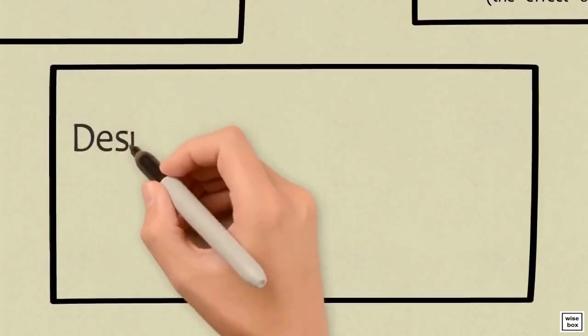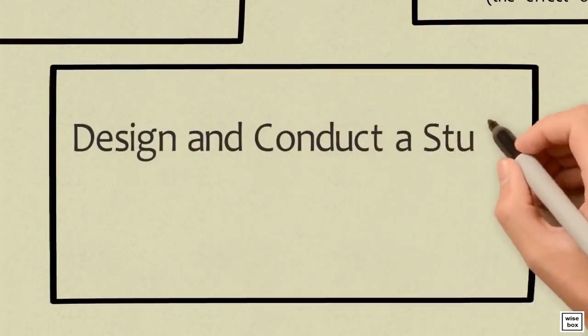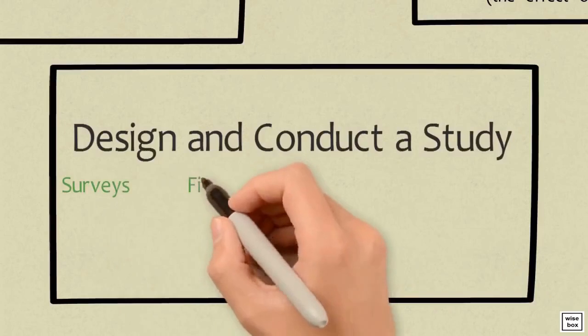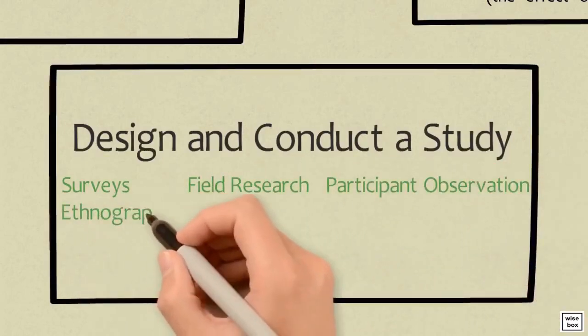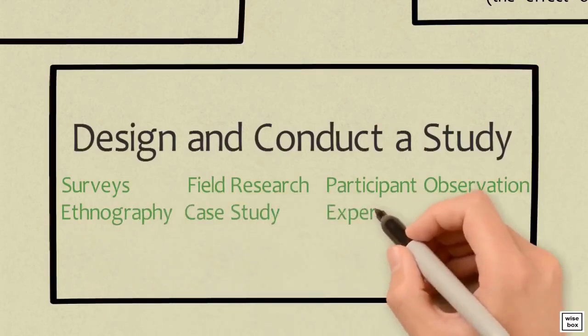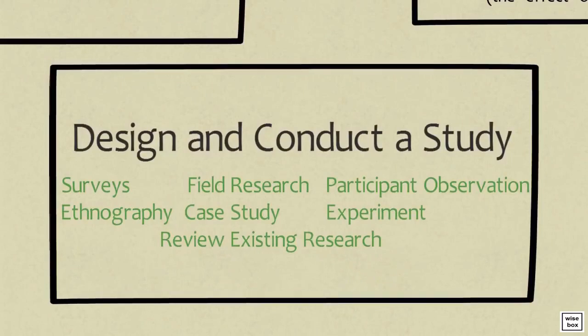The fourth step is to design and conduct a study. There are many different types of studies you can conduct, including surveys, field research, engaging in participant observation, or ethnography. You can conduct an analysis of a single event or a person through a case study, design an experiment, or review existing research.